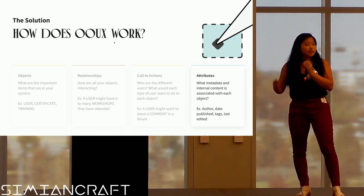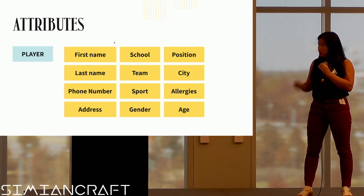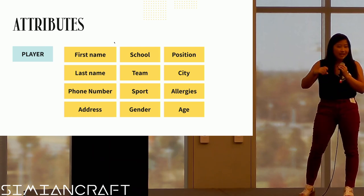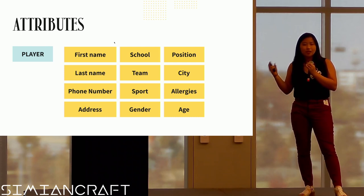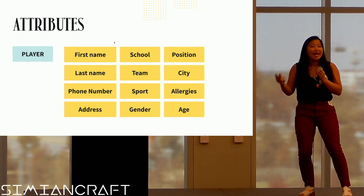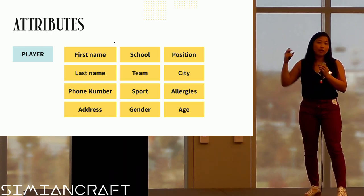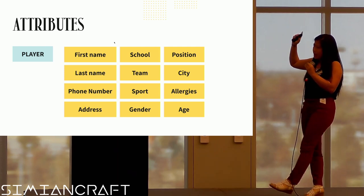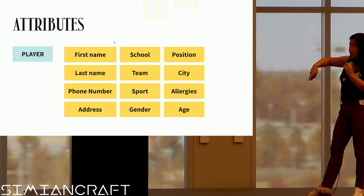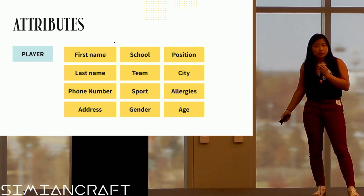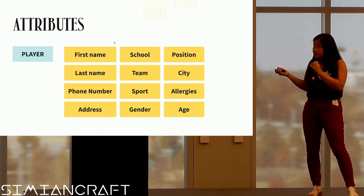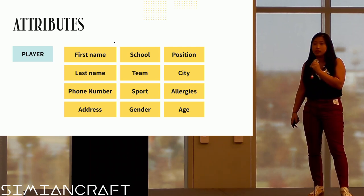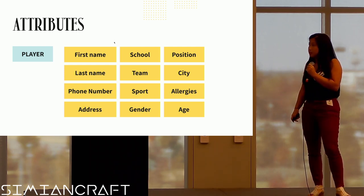The last thing is attributes — what is that data that makes all the instances unique? For a player, we've got first name, last name, phone number, school — the list goes on. We can get these from conversations with stakeholders because we ask, what information do we even need? I could guess — you probably need the name, the number. Do we even need the address? Why do we need the address? Maybe the coach says, we need that for security reasons — and we're like, I didn't even think of that. So we just add to the list.